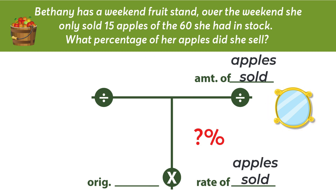Step four is to label the whole. As a general rule, the whole or bottom left will usually be the original amount of what you started with — not always, but most of the time. In this problem with the apples, our whole is the original number of apples.